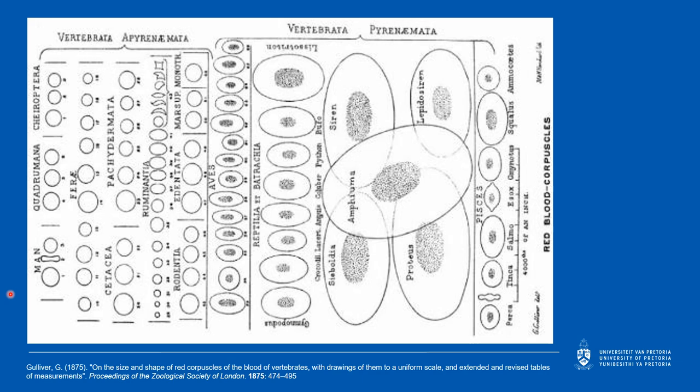One fascinating evolutionary difference between vertebrates is the morphology and size of their erythrocytes. Mammals are the only class of vertebrates to have anucleate red blood cells. Within the order of Mammalia, red cells differ greatly by cell size. This figure, published in 1875, illustrates the differences between red cell sizes of various mammals.